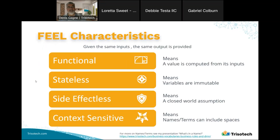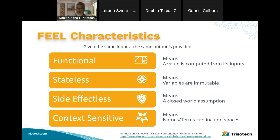Some characteristics of FEEL: it is a functional expression language, it's stateless, side-effectless, and context-sensitive. Functional means we compute a resulting value from the inputs provided. Stateless means the variables are immutable — once we have the data, we're done. Side-effectless means we have a closed-world assumption; there is no other effect than providing you with results. Context-sensitive means we can use terms that include spaces, which allows us to write expressions that are closer to natural language.